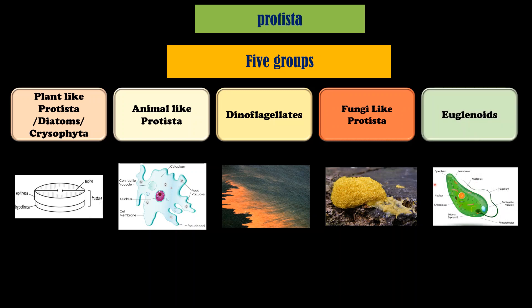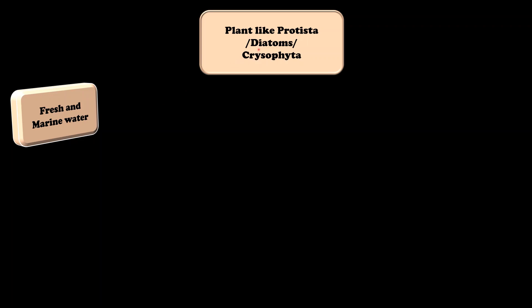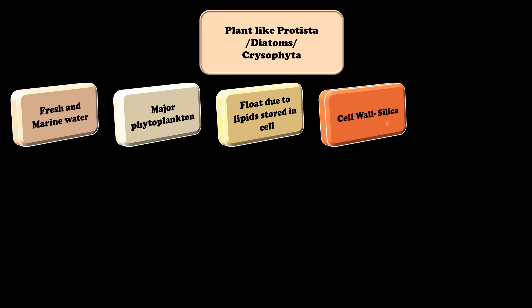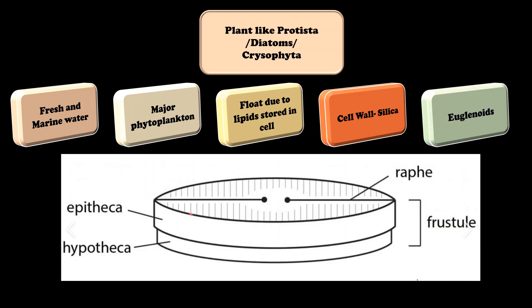The first group is plant-like Protista, also called Chrysophyta or diatoms. They are found in both fresh as well as marine water and commonly found floating on the water surface as they store their food as lipids. Diatoms show beautiful designs on their surface due to deposition of silica in their cell wall. They show a soap-case-like structure — the upper lid is called epitheca whereas the lower part is called hypotheca. These diatoms have diverse applications in industries.